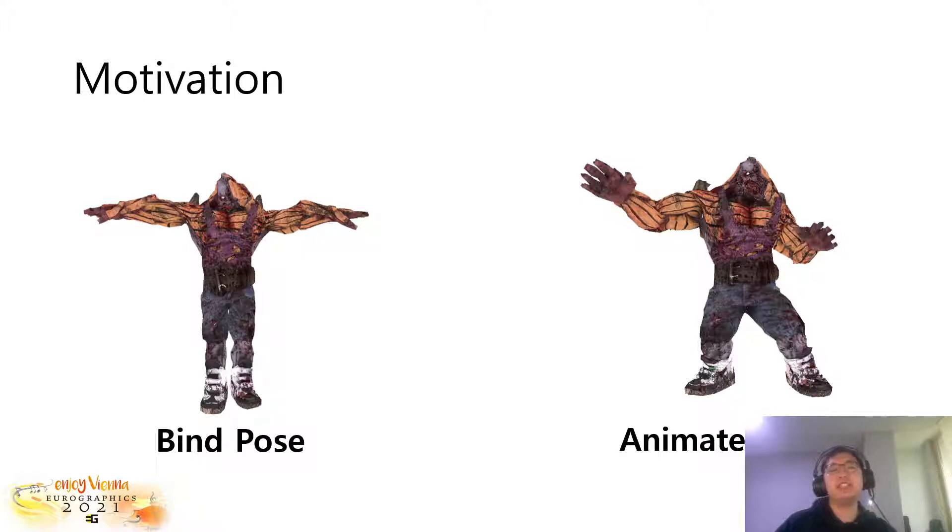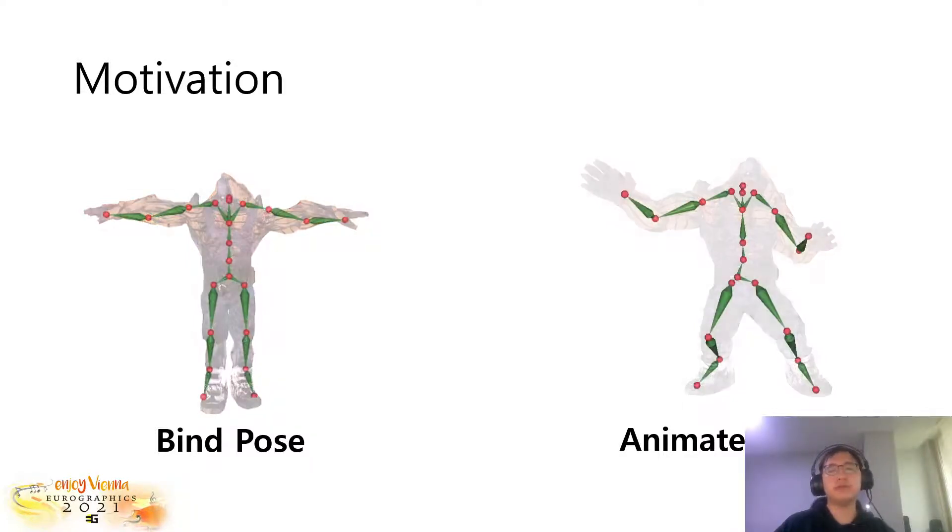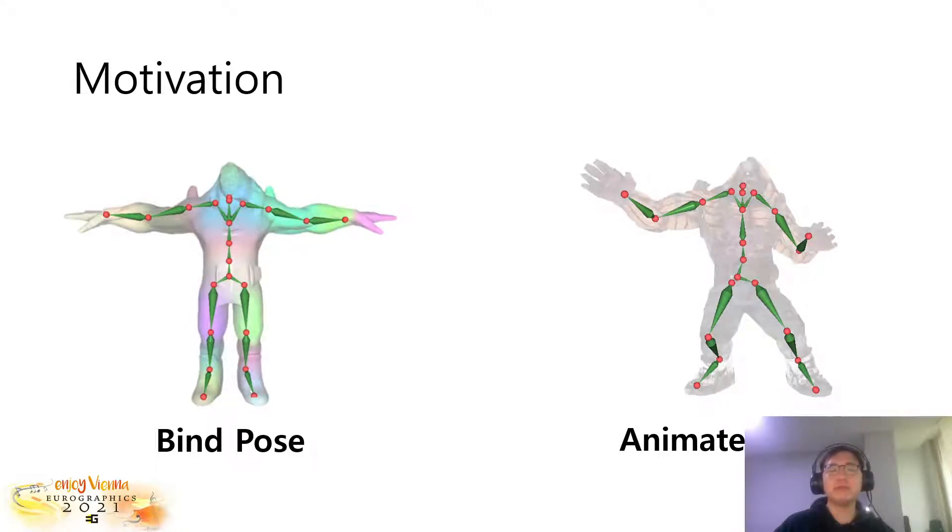In 3D character animation, a character starts from its canonical pose called bind pose, which is also known as T-pose or A-pose. The motion of the character is defined using the sequence of the character's underlying skeleton. Based on the animated skeleton, the character's mesh is then deformed along with the skeleton based on its skin weight, which defines the relation between the character's mesh and the skeleton bone.